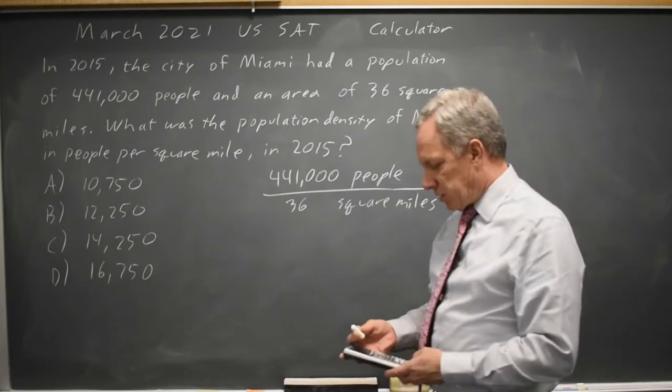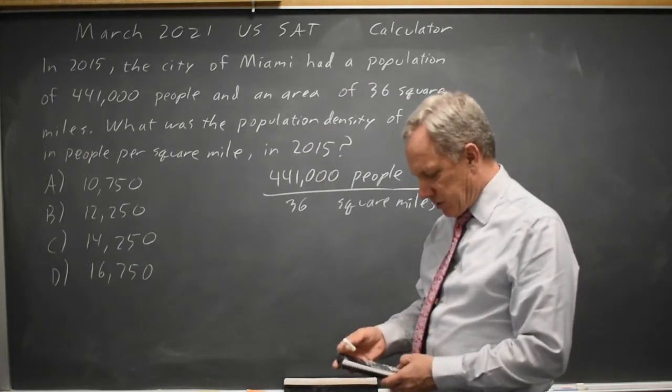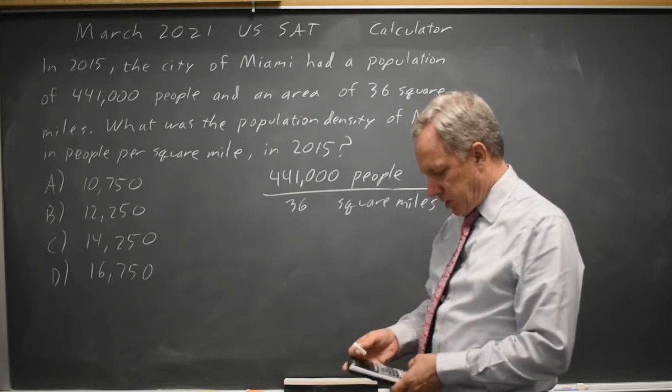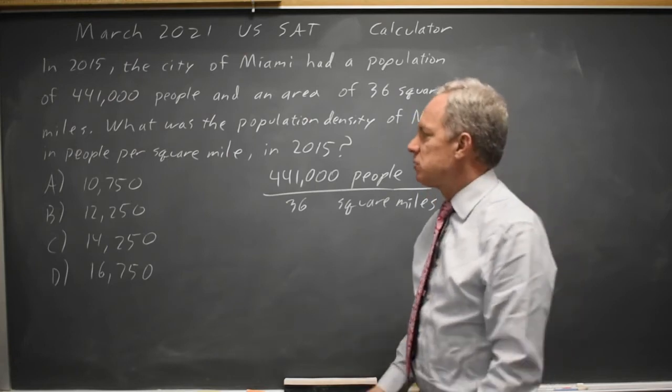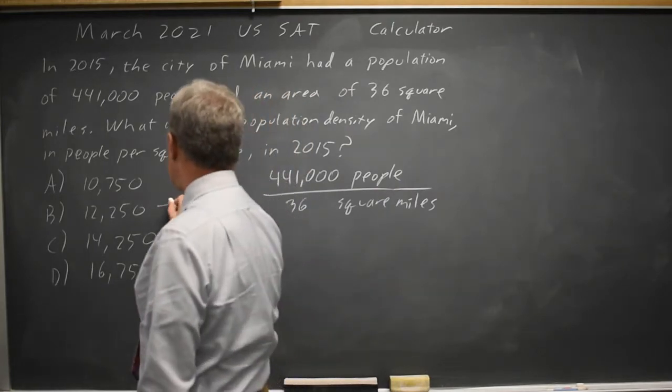On my calculator, 441,000 divided by 36 gives me 12,250. That is choice B.